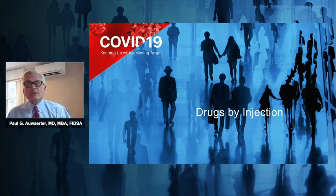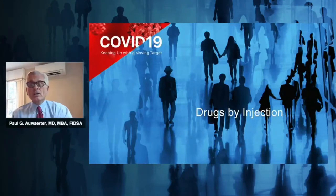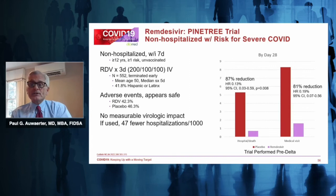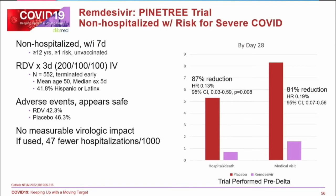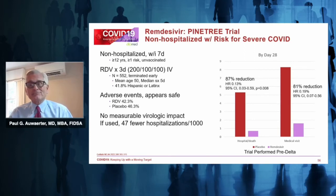For injectable drugs, remdesivir will likely see increased use based on the PINETREE trial, which was stopped prematurely when monoclonals became available but showed a nearly 90% reduction in hospitalization or death — similar to the protease inhibitor — and substantial reduction in need for medical visits. It's given as a three-day infusion within the first seven days of symptom onset, with the first dose at 200mg followed by 100mg daily. Logistics are the main challenge, requiring infusion centers or capable home infusion services.